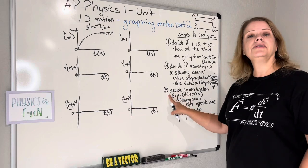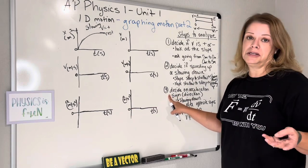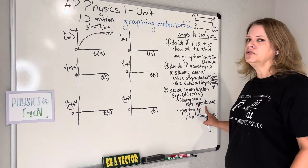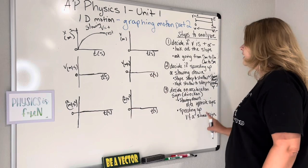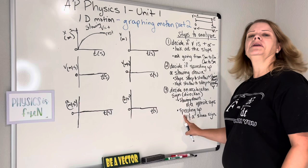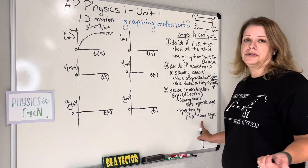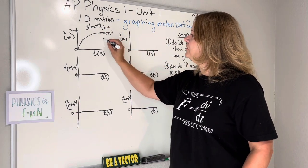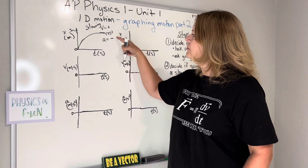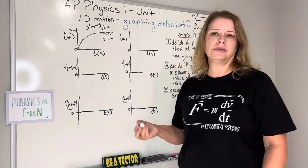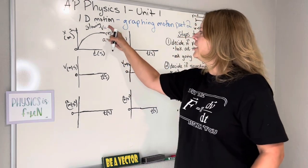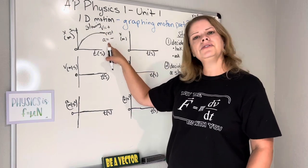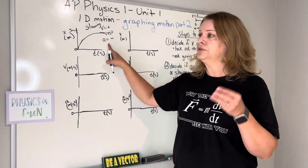Now my third step: decide the sign on your acceleration — meaning the direction. If you're slowing down, then your velocity and acceleration are opposite signs. This will come to haunt you through a lot of the year — it's an important concept. If you're speeding up, your velocity and acceleration are the same sign. So I'm slowing down, and if my velocity is positive, that means my acceleration must be negative. I know the velocity sign, whether I'm speeding up or slowing down, and the acceleration sign — and I'm ready to go.